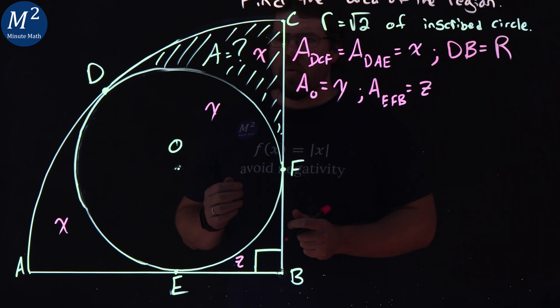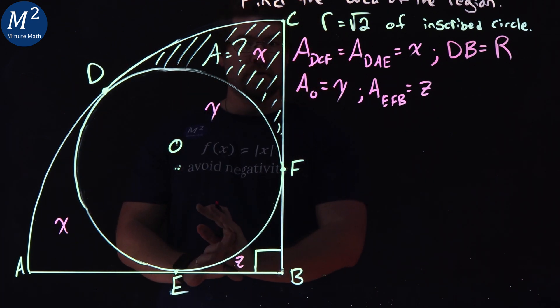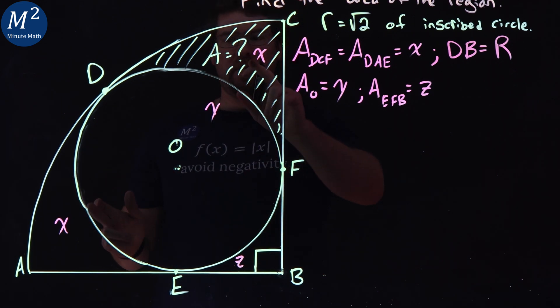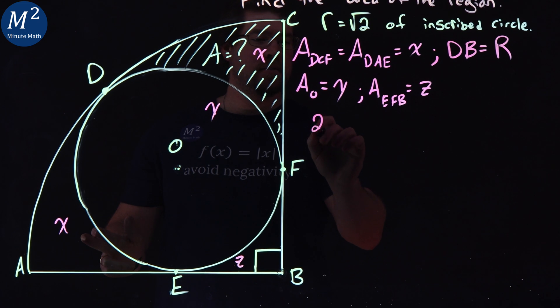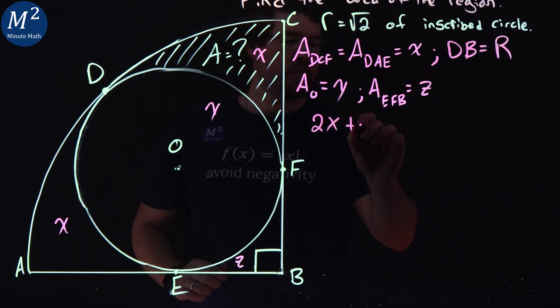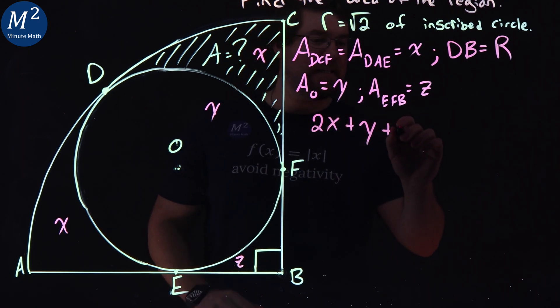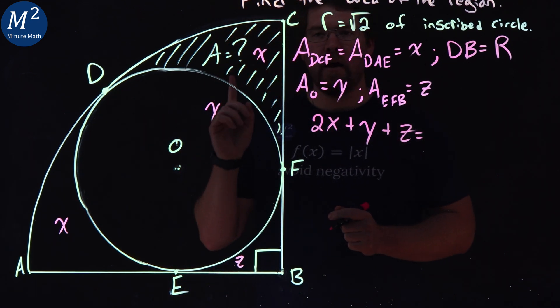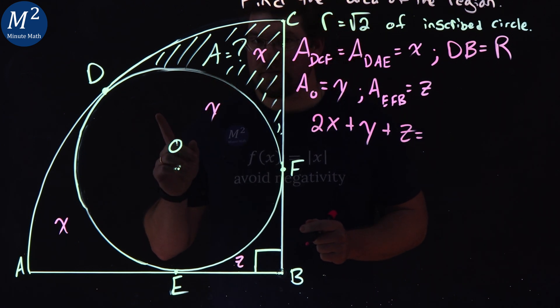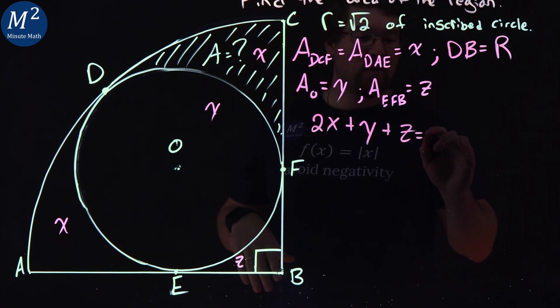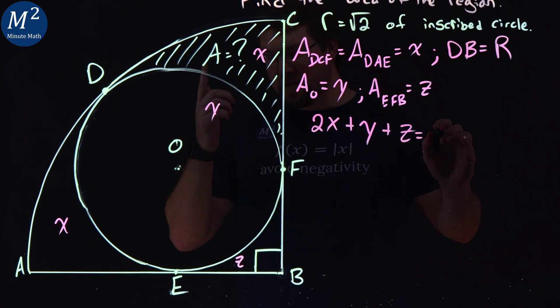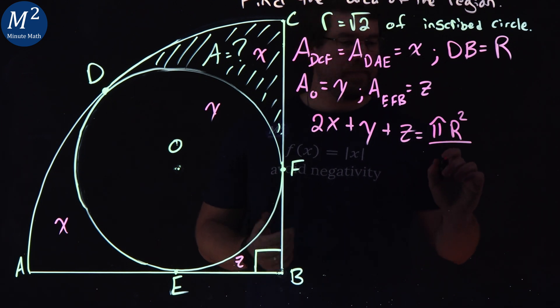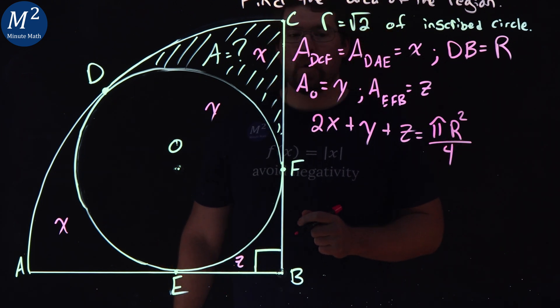All right. Well, the overall area of this whole quarter circle can be summed up of all the parts. We have XX, so 2X, plus our region Y, plus our region Z. And that is equal to the total area of our quarter circle, which is pi R squared over 4. It's the quarter circle. So pi big R squared over 4, being a quarter circle.